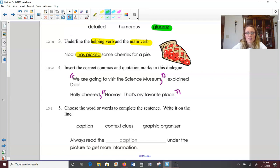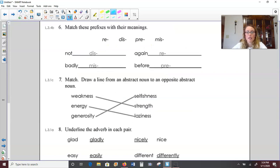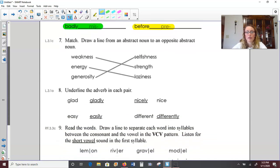Number five, choose the word to complete the sentence. Caption, context clues, or graphic organizer. Always read the caption under the picture to get more information. Over to number six, match these prefixes with their meanings. The prefix not would be dis, like disapprove means to not approve. The prefix again is re. If you have to redo something, you need to do it again. Badly is mis. Like if you misbehave, you are behaving badly. And pre means before. Like you preheat the oven. You heat it before you cook or bake.